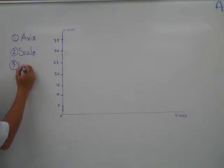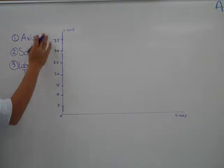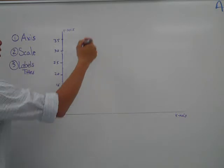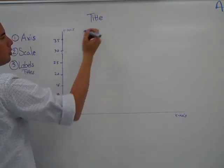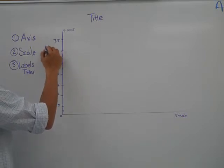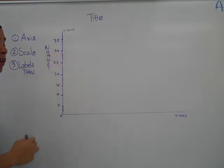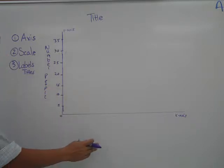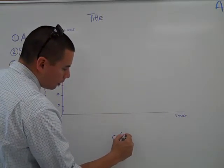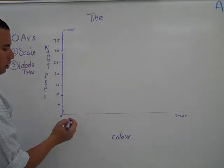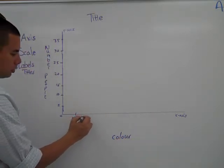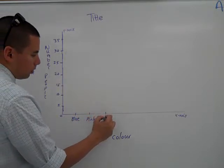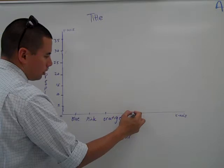The next thing that students need to have is labels and titles. Without labels and titles you have no idea what these numbers mean or what the categories are that we're looking at. You need to make sure you have a title right at the top. You need to label these - normally a number of people, but if we don't say that it could be number of monkeys, it could be number of books that we counted. It all depends on what you're surveying. And of course you'll have your categories here. Let's just do our favorite colors. I don't know if you can see that in the camera, but we'll do our favorite colors and we'll label blue, pink, orange, and yellow.